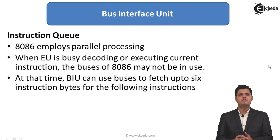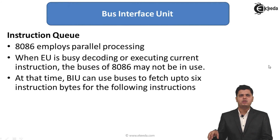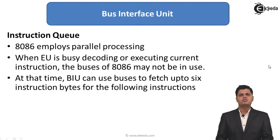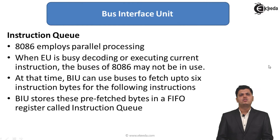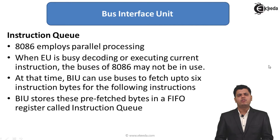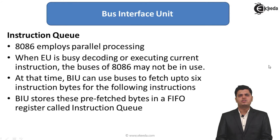At that time, the bus interface unit can use the buses to fetch up to six instruction bytes from the following instructions. When the execution unit is doing something, the bus interface unit fetches six instruction bytes, which are stored in the instruction queue. Whenever the next instruction comes to the 8086 microprocessor through the bus interface unit, it is first stored in the six-byte instruction queue.